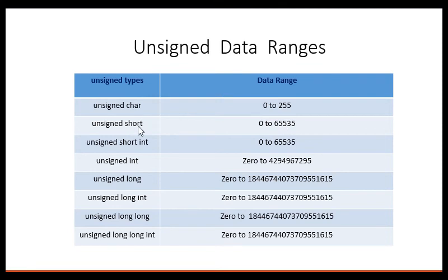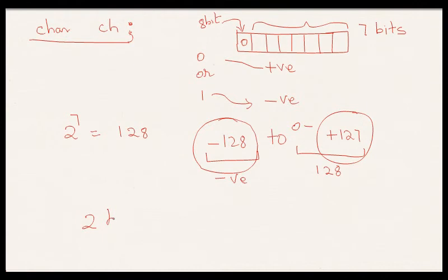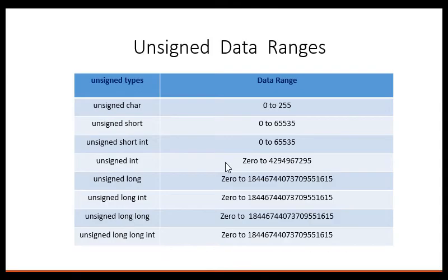Because unsigned short takes 2 bytes. 2 bytes means 2 power 16. And if you compute that, you will get 0 to 65K.